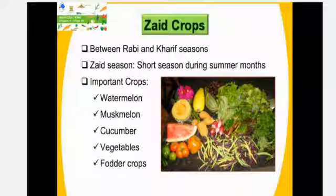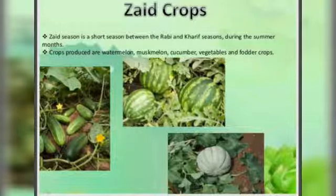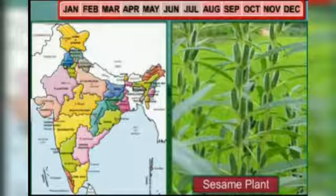The Kharif season comes with the onset of monsoon in different parts of India in the month of July to August. Kharif crops are harvested in the month of September and October. Important Kharif crops are rice, maize, millets, jowar, bajra, pulses and oil seeds like groundnut and soya bean.